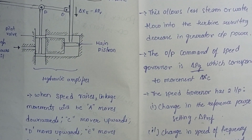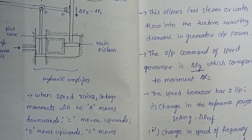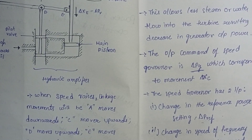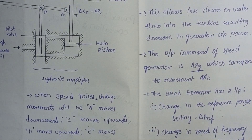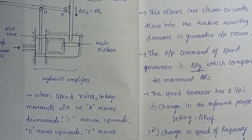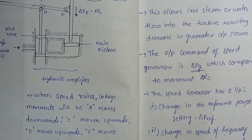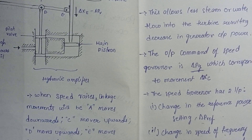It is to be noted that a positive reference will result in a positive speed governor output, and if the reference is negative it will result in a negative output from the governing system.